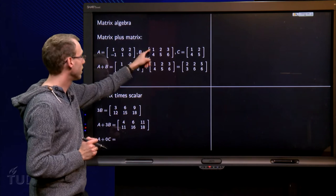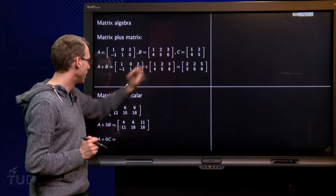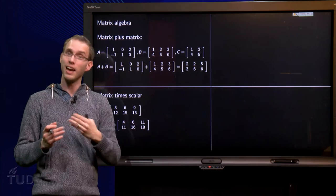So 3 times B becomes 3, 6, 9, 12, 15, 18. Indeed.